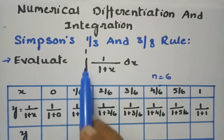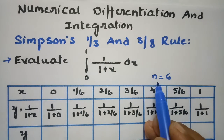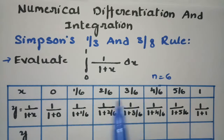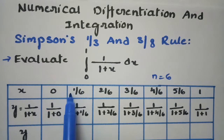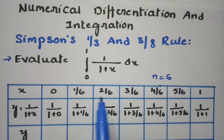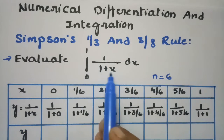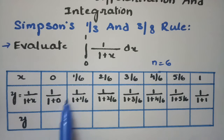I am going to evaluate the integral from 0 to 1 of 1/(1+x) dx. Here I am taking n as 6. So I have to split into these parts, starting with 0, then 1/6, 2/6, 3/6, 4/6, 5/6, and 6/6 which equals 1. So y = 1/(1+x), and I have to substitute the value of x.